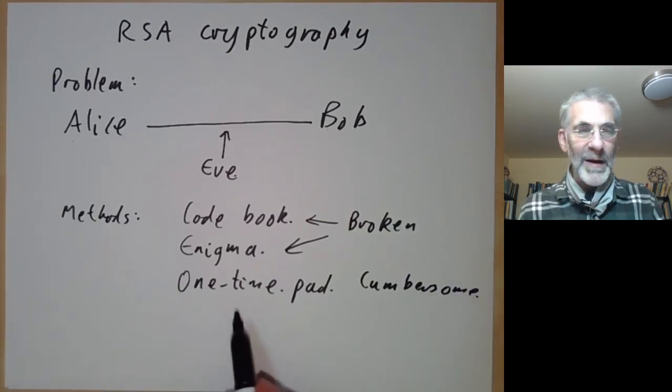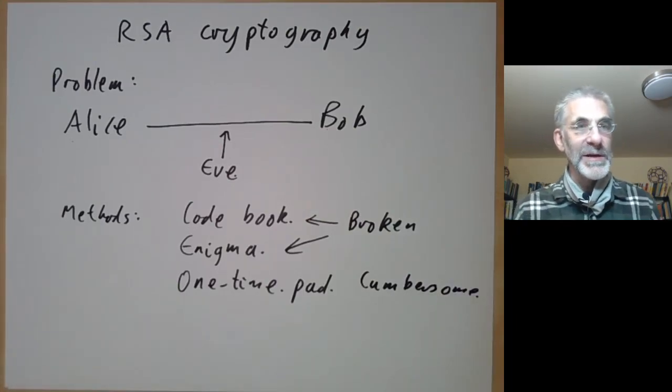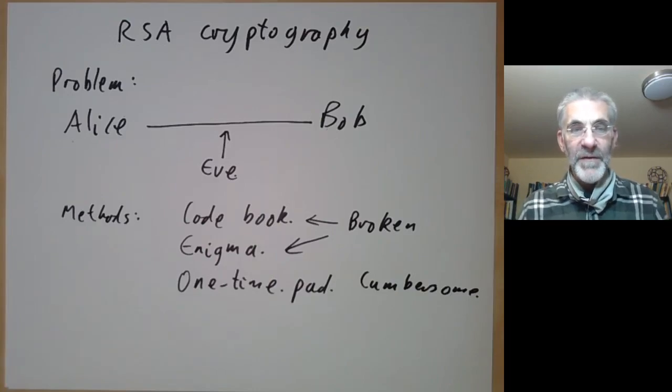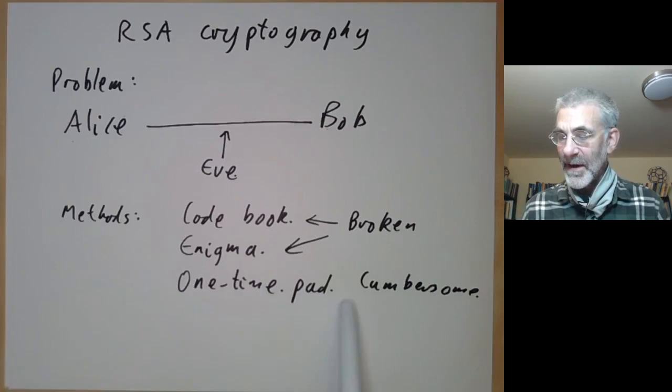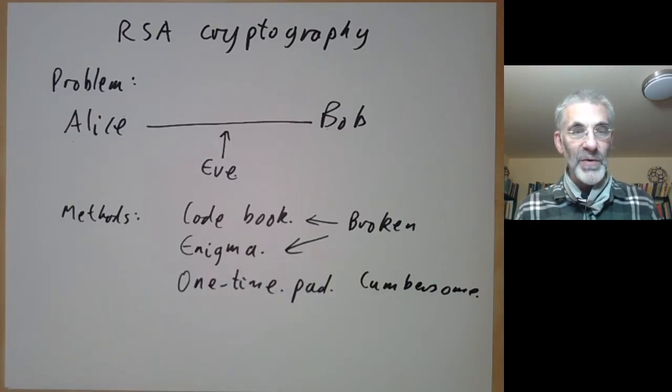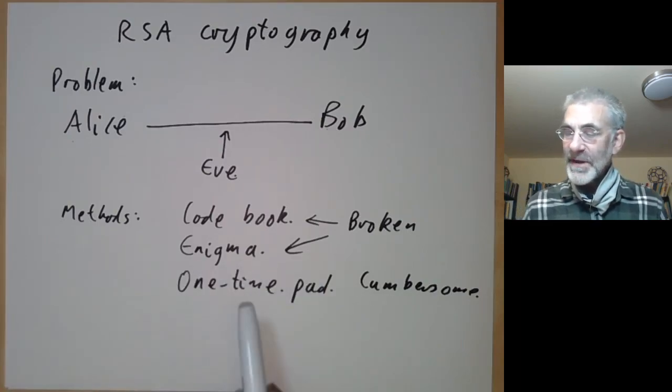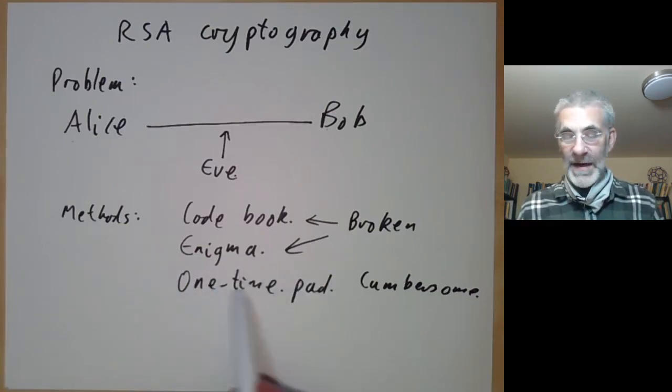Making one-time pads used to be a really tedious process. It was used for very high secure communications—for example, the Russians tended to use one-time pads for their spies in the United States. Obviously it has a disadvantage that if you're caught with a one-time pad on you, it's a little bit difficult to explain away.